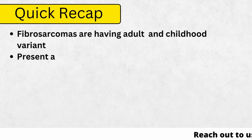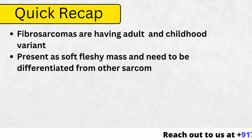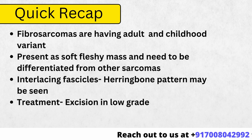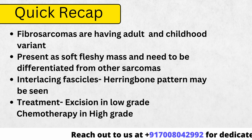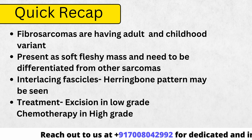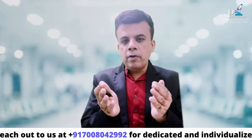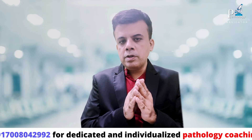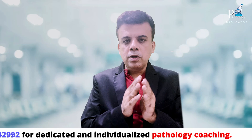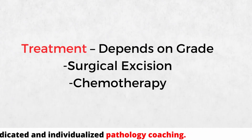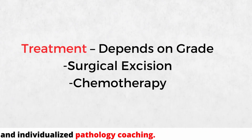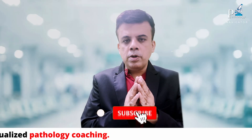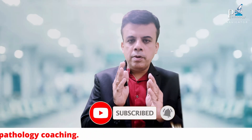To recap: fibrosarcoma commonly presents in the lower extremities, retroperitoneum, and mediastinum, and in the axial region in the infantile variant. The herringbone pattern is seen histologically, with varying degrees of pleomorphism and positivity for vimentin and reticulin stain. Treatment is by local excision or chemotherapy depending on the grade of the tumor. It must be carefully differentiated from de-differentiated variants of synovial sarcoma, MPNST, and other rare malignant tumors.